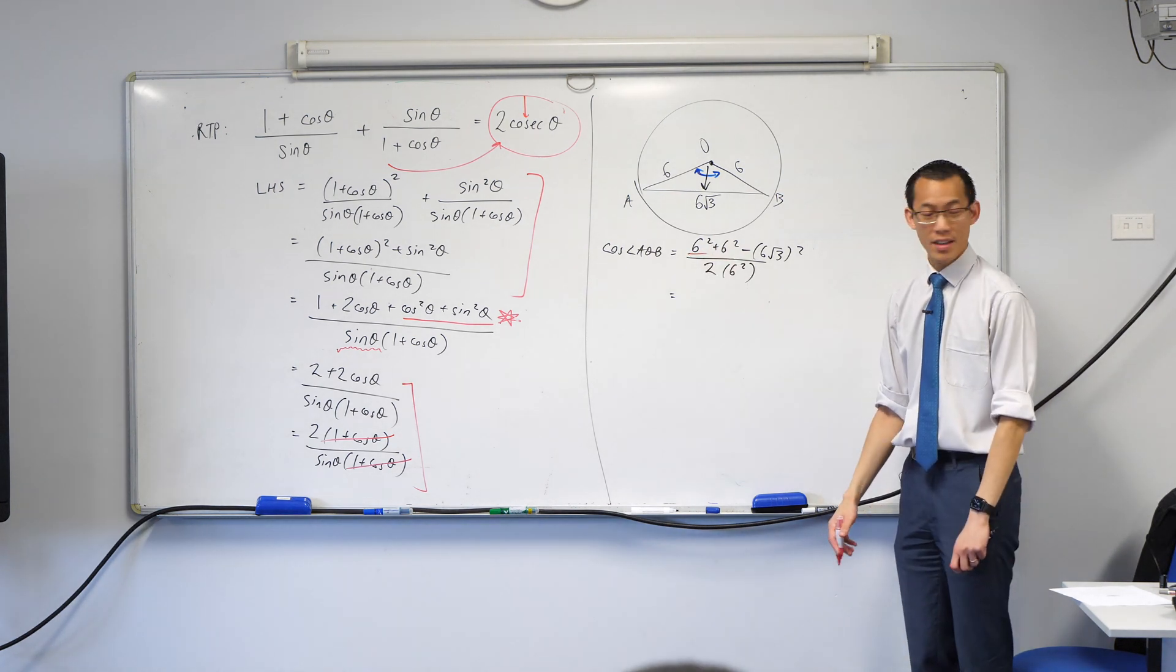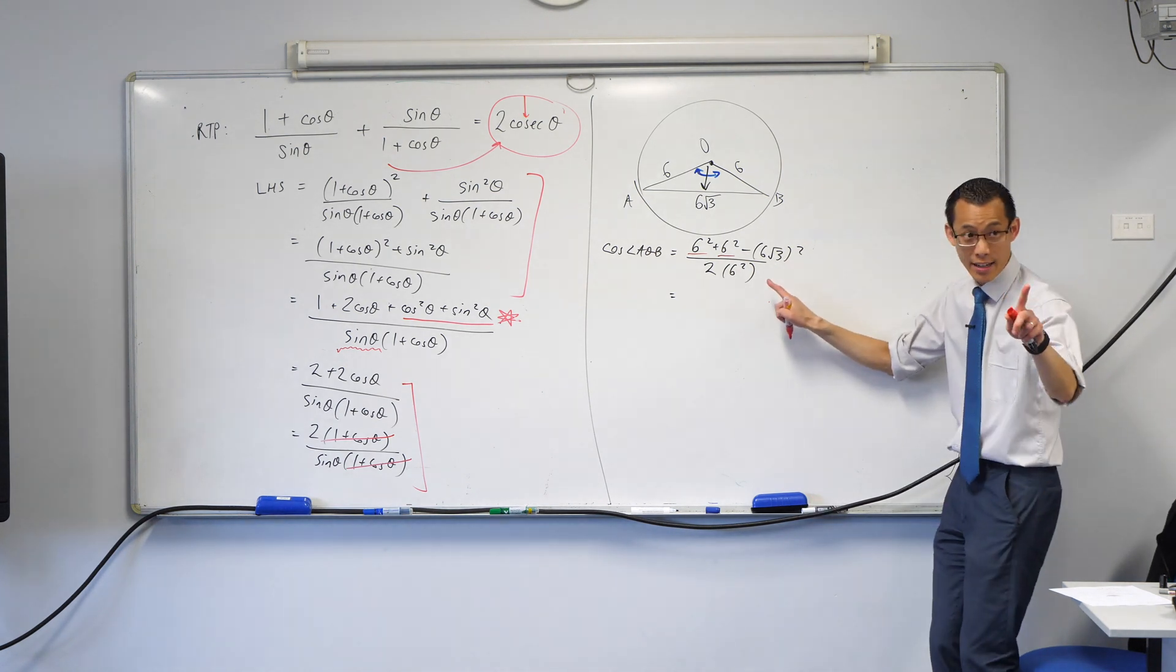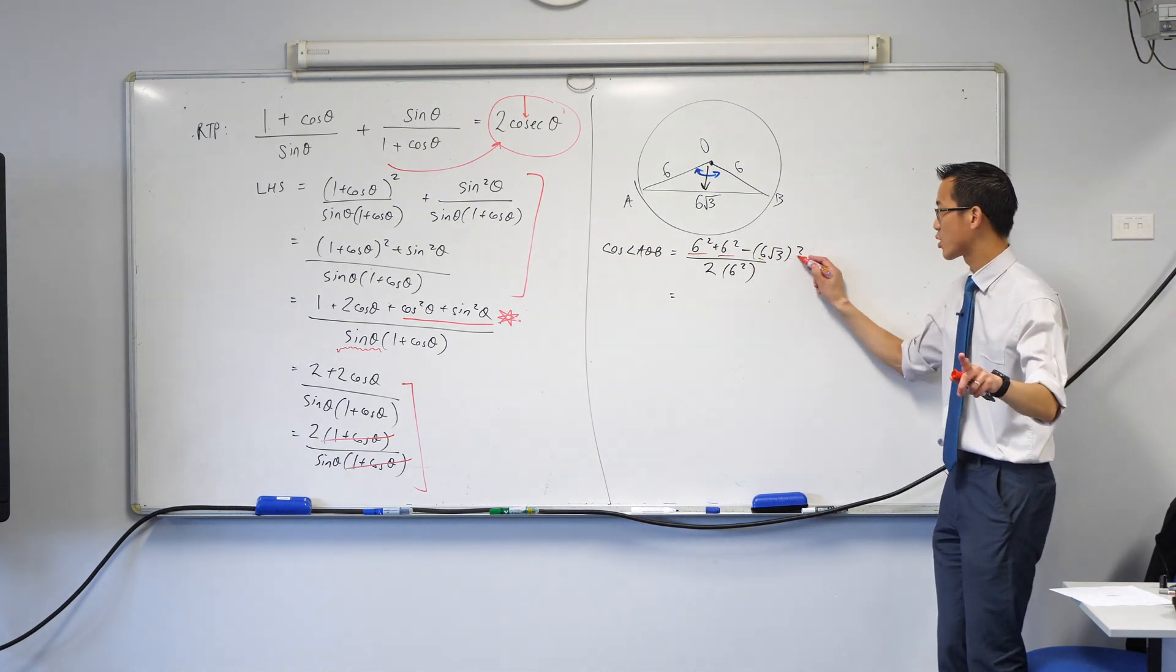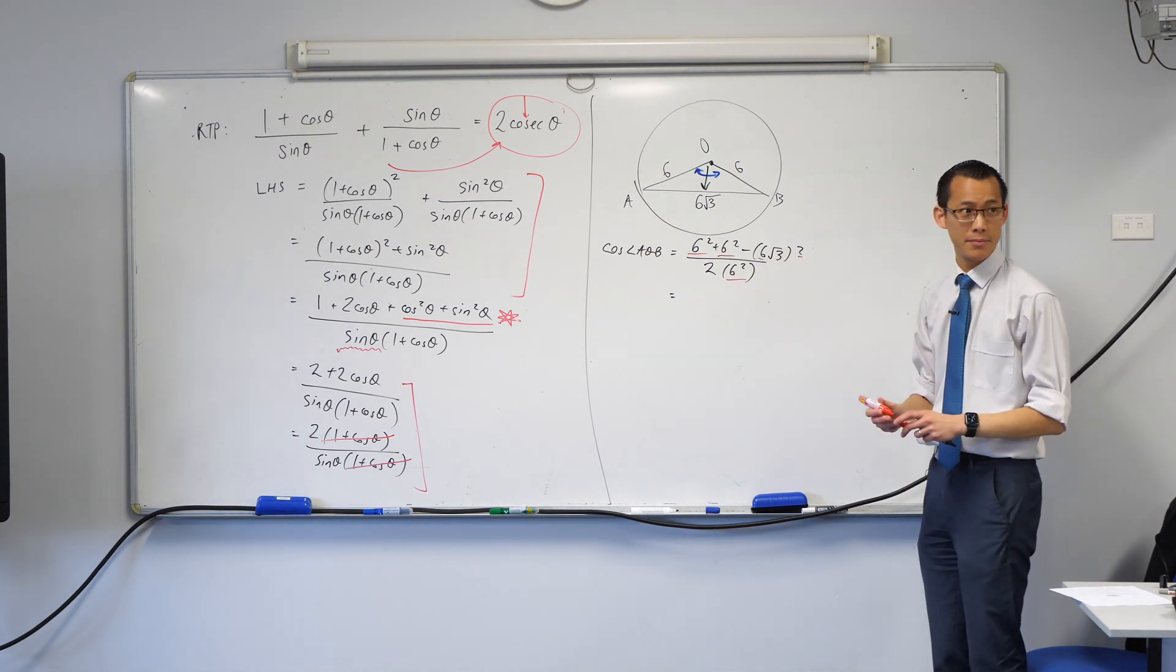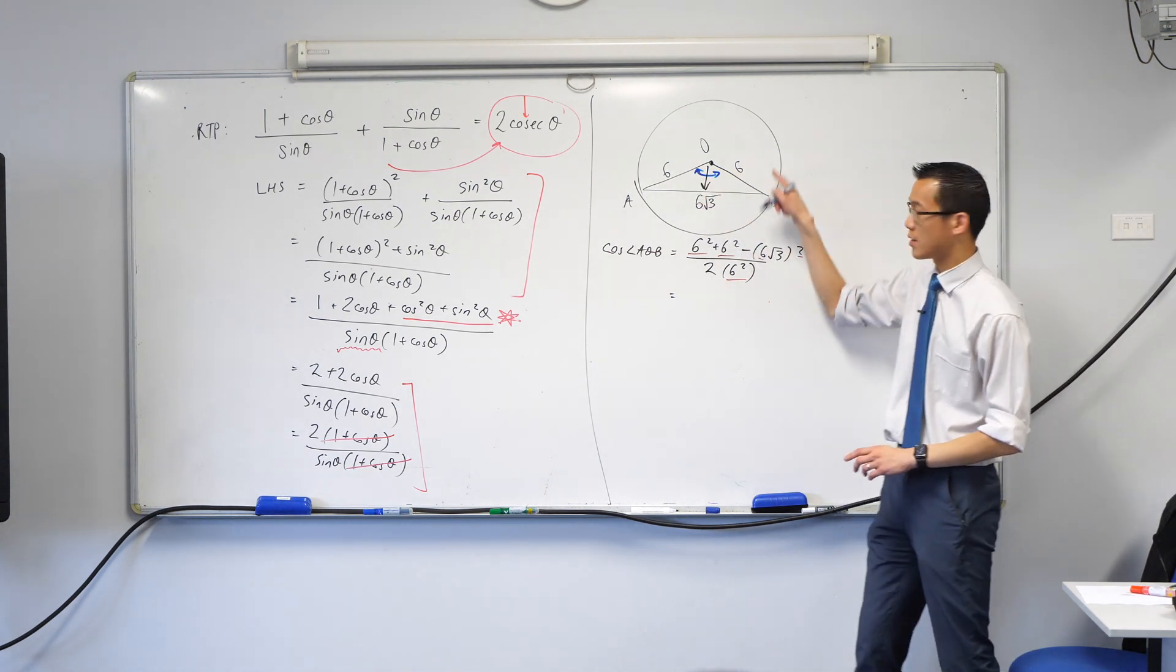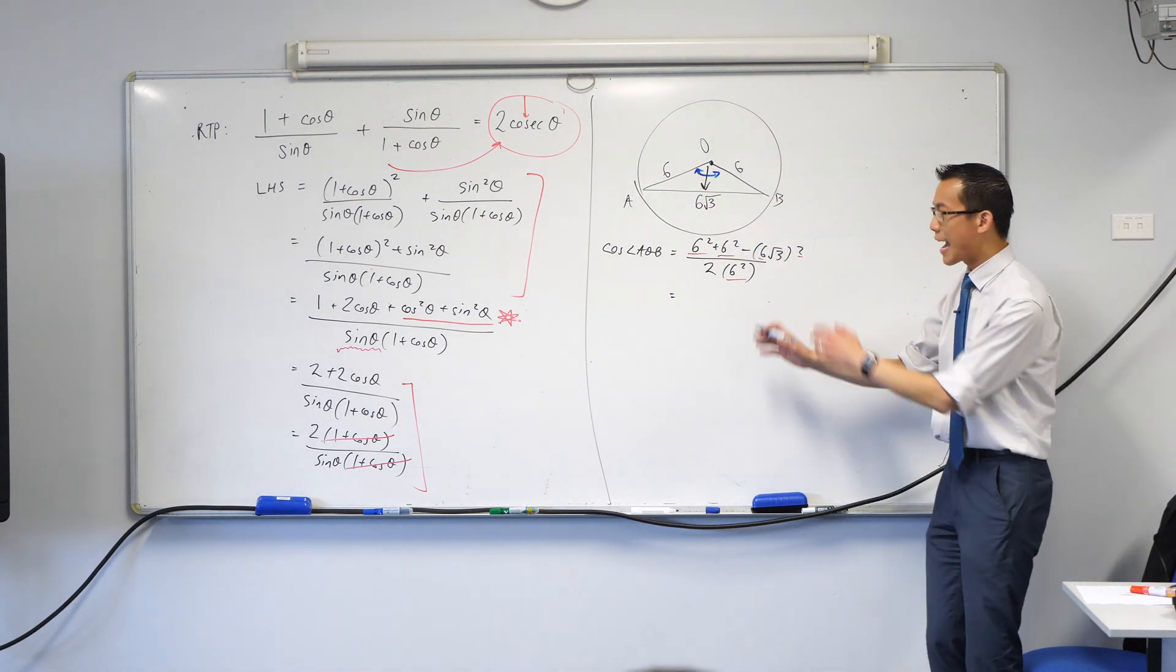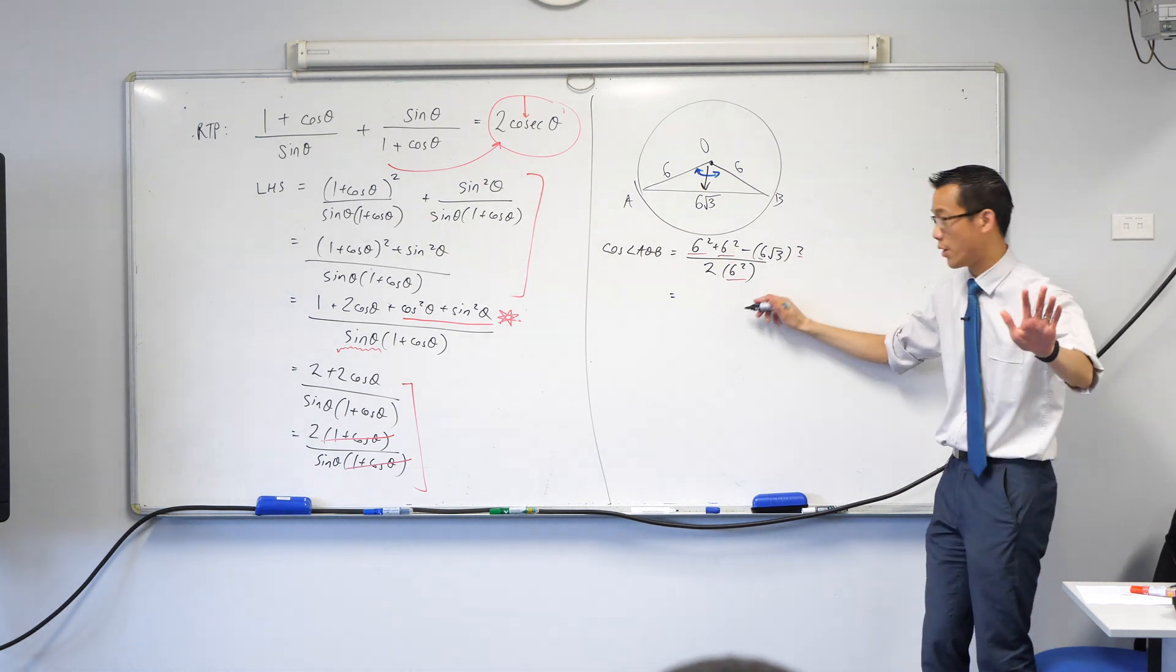See how there's a six squared there? And there's also a six squared there? And there's hiding a six squared there and there's one last six squared down here. Do you notice that? Now this actually always happens in circles because of this radius business. So I can just cancel six squared from the top and from the bottom. Watch closely.